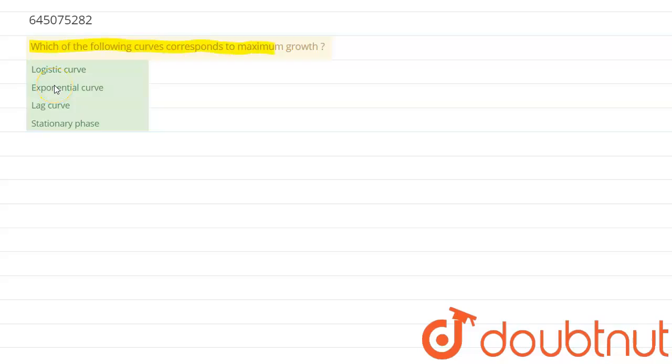The options are: logistic curve, exponential curve, lag curve, or stationary phase. So the growth curve which is being asked about in the question has four different phases.